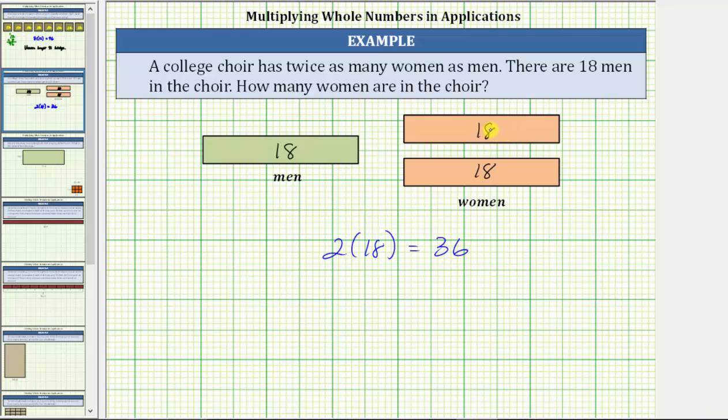Of course, we could have also found the number of women by determining 18 plus 18, which is equivalent to two times 18. There are 36 women in the choir.